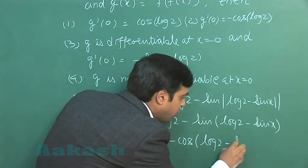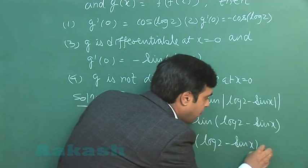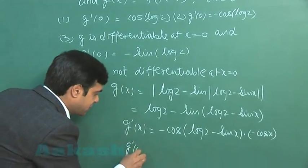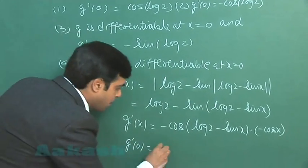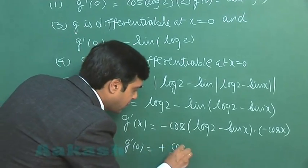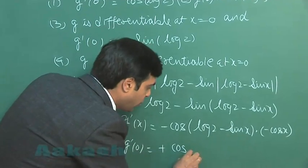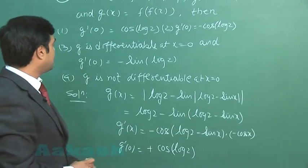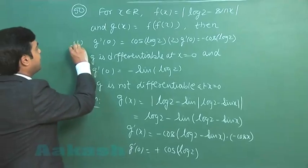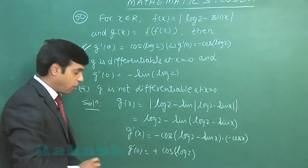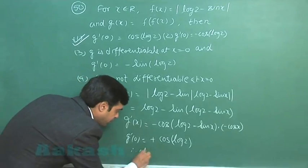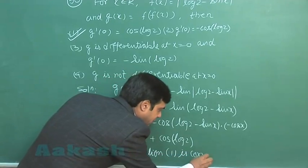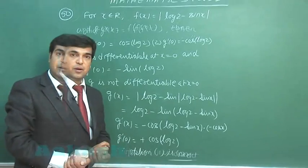On differentiating, g'(x) equals minus cos(log(2 minus sin x)) multiplied by minus cos x. Substituting x equals 0, the minus signs cancel and we get cos(log 2). So from the given options, option 1 is g'(0) equals cos(log 2), therefore option 1 is correct.